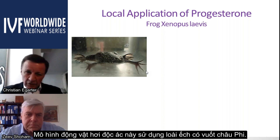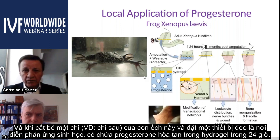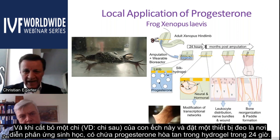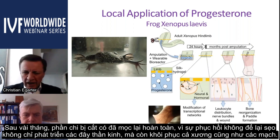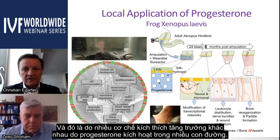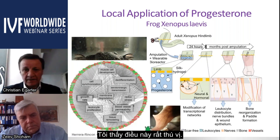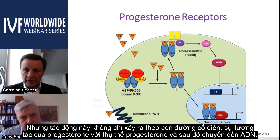A very recent and highly interesting animal model demonstrates the huge impact of progesterone on different pathways. In this model, the frog Xenopus laevis was used: when one extremity — the hind limb — was cut off and a wearable reactor with progesterone dissolved in hydrogel was applied for 24 hours, complete scar-free restoration of the extremity occurred over the following months, involving nerve, bone, and vessel regrowth.